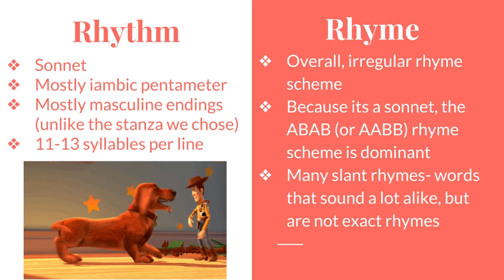For rhyme, the entire poem has an irregular rhyme scheme caused by the inclusion of the first stanza being in free verse. Other than that, the poem is a sonnet with a dominant A-B-A-B or A-A-B-B rhyme scheme. The poem has many slant rhymes where the two words have similar sounds that don't rhyme completely — for example: reaction, skin, liver, forever.